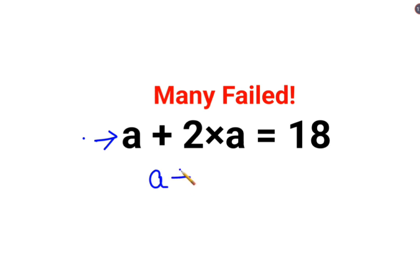So we can say, A plus 2 multiplied by A is 2A equals 18. And A means what? The coefficient with A is 1. So 1A plus 2A gets you 3A equals 18.